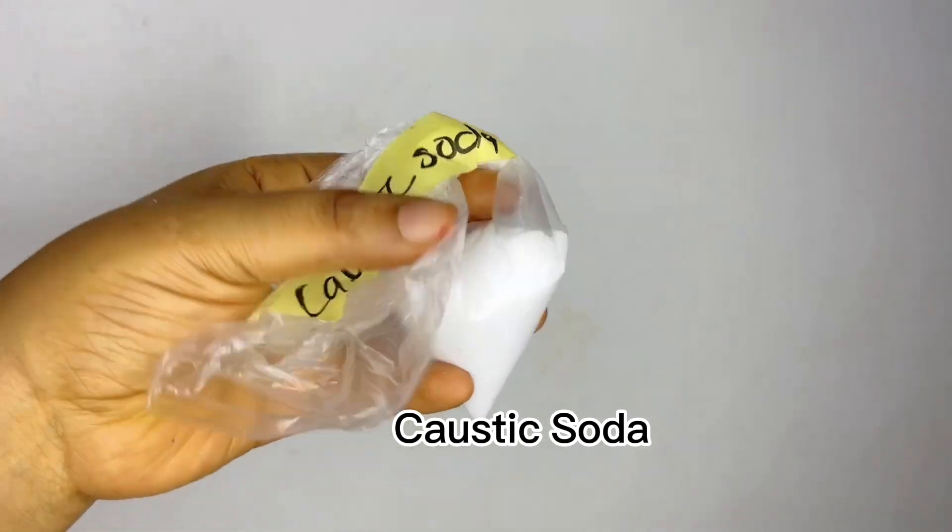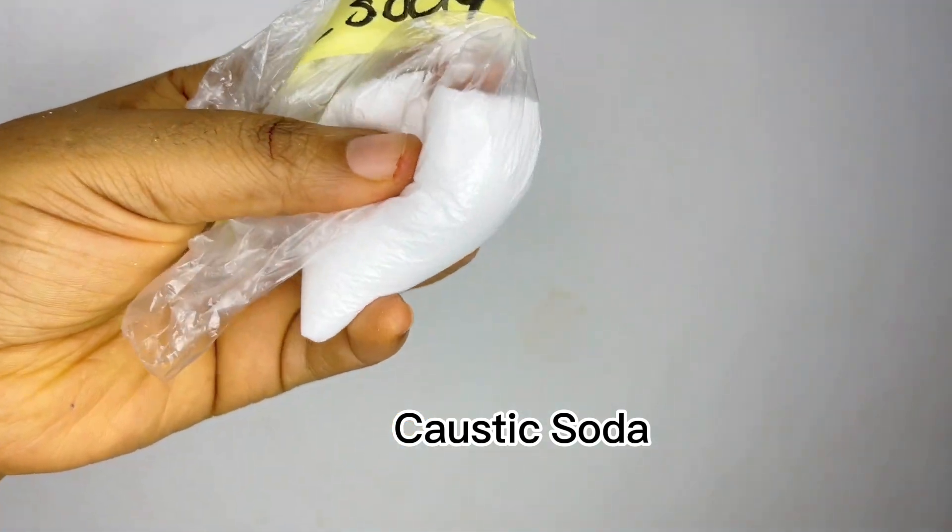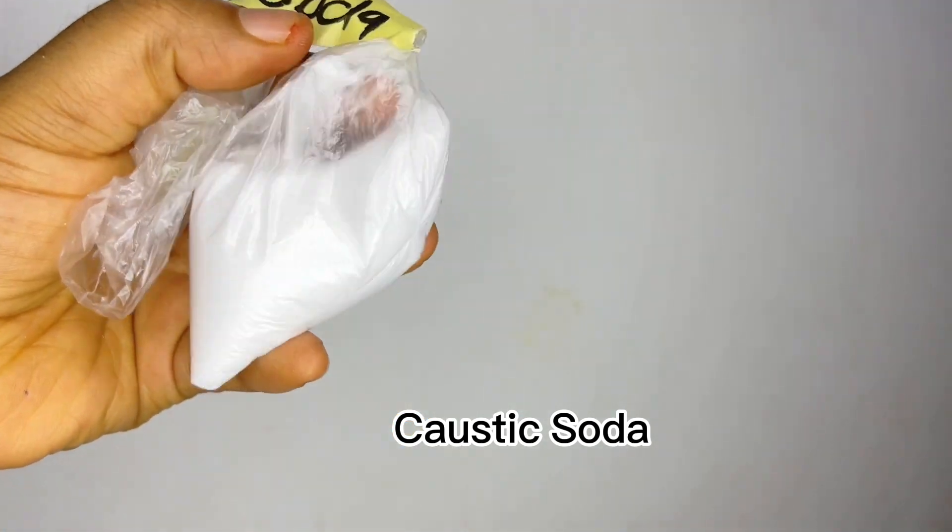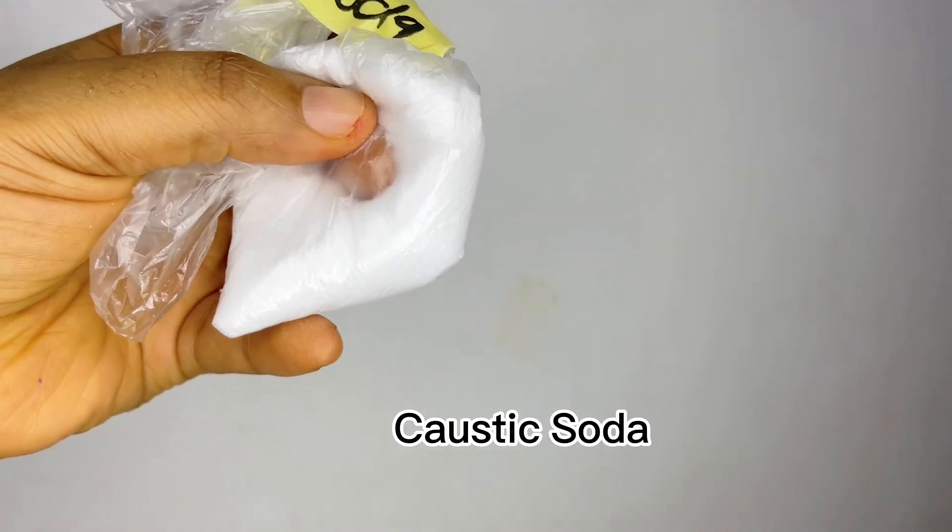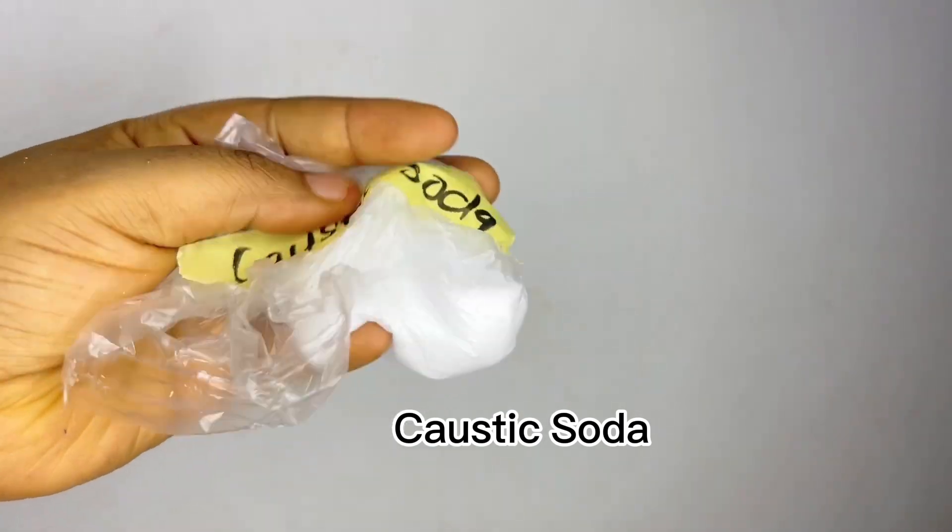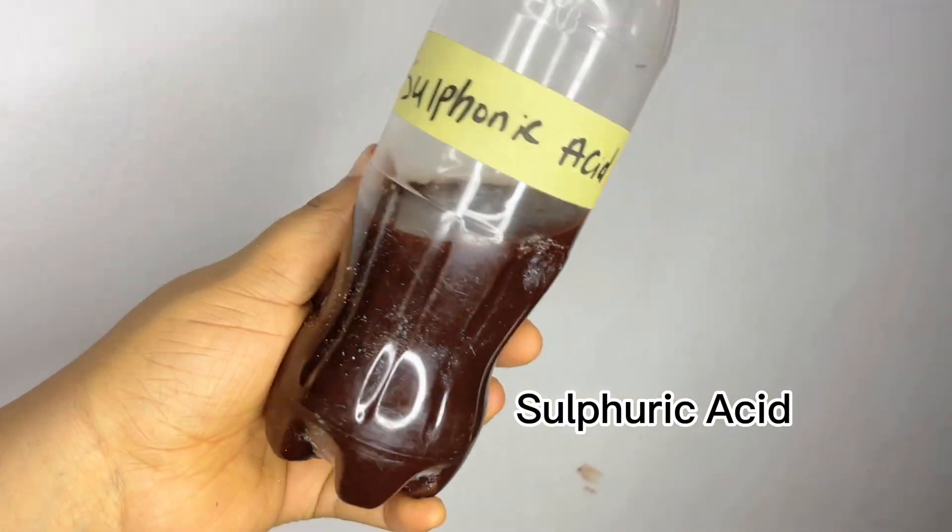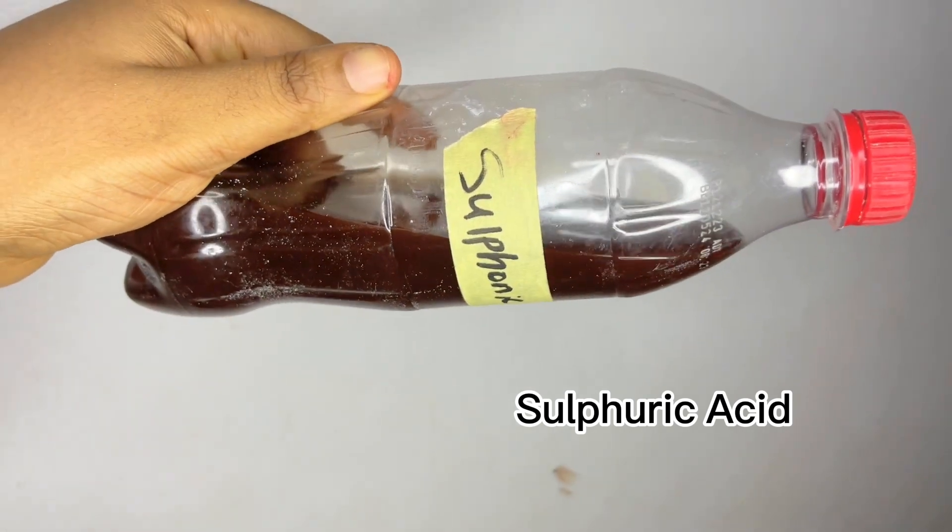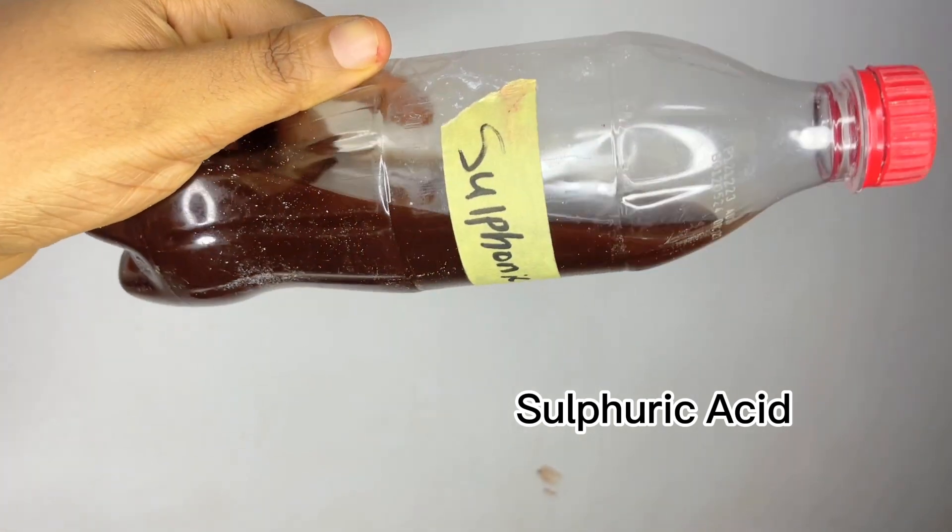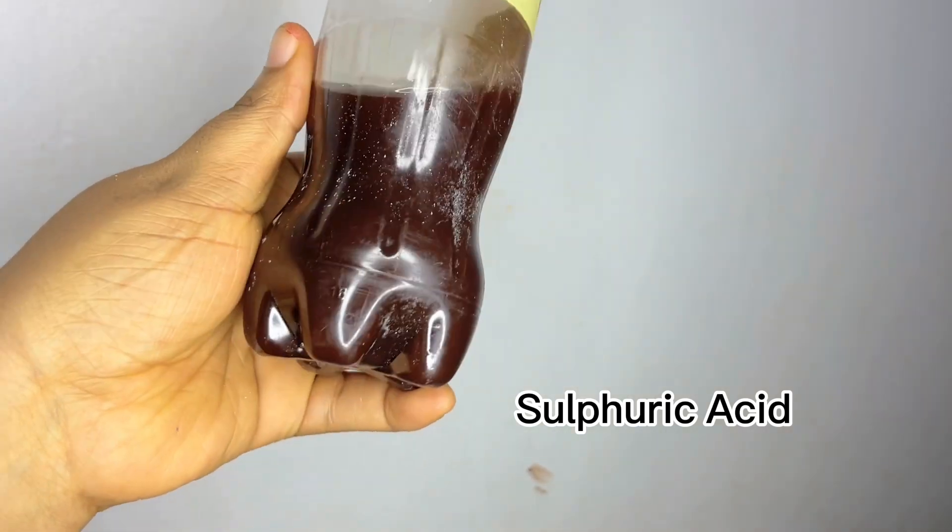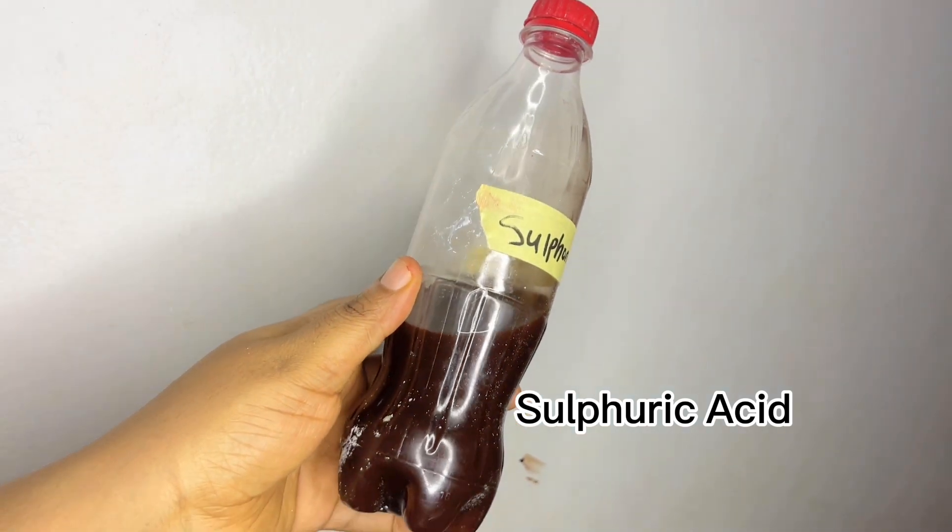Moving forward is our caustic soda, which is a whitish crystalline chemical that looks like granulated sugar. It is very corrosive and you need to be very careful around this chemical. Next is our sulfuric acid. This particular chemical acts as a foam boosting agent. Yes, it boosts foam, it boosts lather, and it also helps get rid of dirt from anywhere this soap will be used.